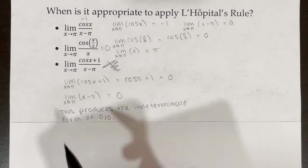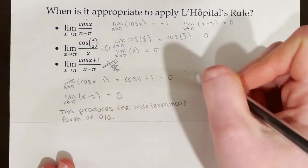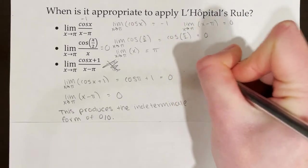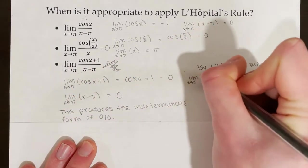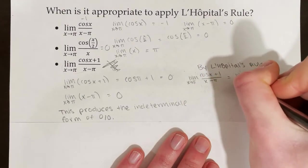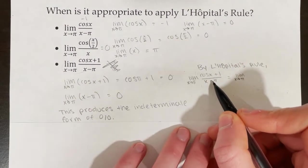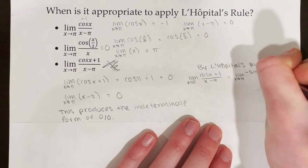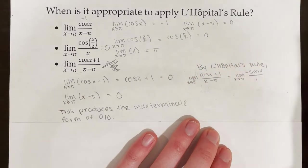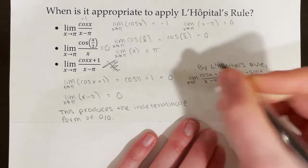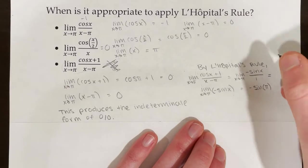Now that we've determined this is a situation where we apply L'Hôpital's rule, let's practice. On a free response question, you need to indicate you're using L'Hôpital's rule — write 'by L'Hôpital's rule.' Then copy down the original problem and take the derivative of the numerator and denominator separately, keeping the limit notation. The derivative of cos(x) + 1 is −sin(x), and the derivative of x − π is 1. So we get the limit as x approaches π of −sin(x). Using direct substitution: −sin(π) = 0.